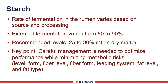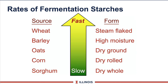Another source, of course, is starch. Starch varies depending on the source and how it's being processed, and it can vary a great deal. This is critical because it reflects the amount of fermentable carbohydrates entering the rumen, and if we get it wrong, we can have problems with our dairy animals. This schematic shows fermentation rates — wheat is very fast, where sorghum is very slow. Steam flaking makes it very fast, whereas dry rolling slows it down. Farmers and nutritionists can change rates of starch degradation depending on its source and form.